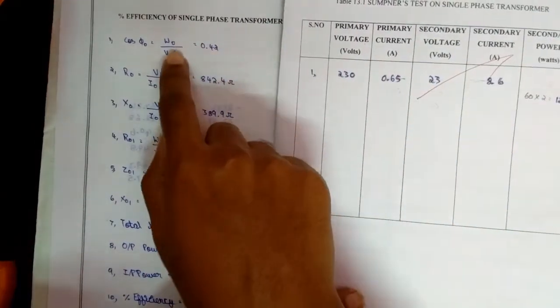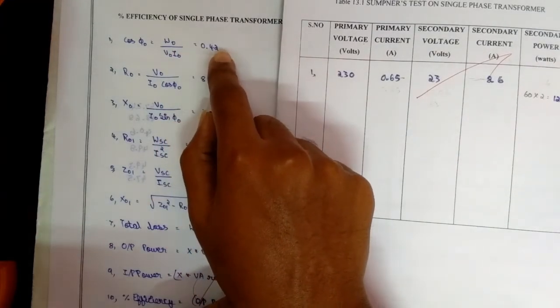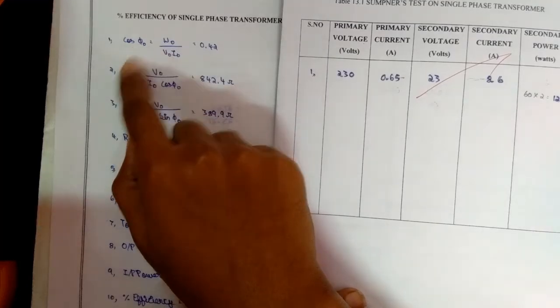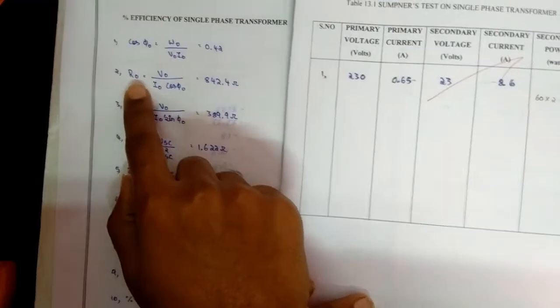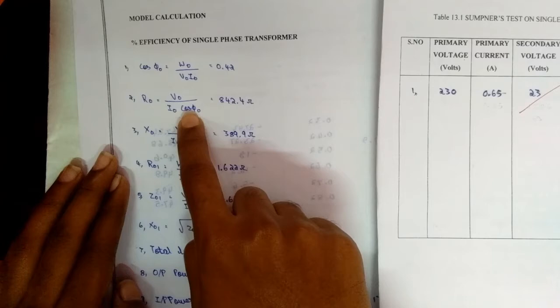On substituting these values here, you will get value as 0.42 from which the φ₀ will be found. And then for R₀, the formula will be V₀ by I₀ cos φ₀.